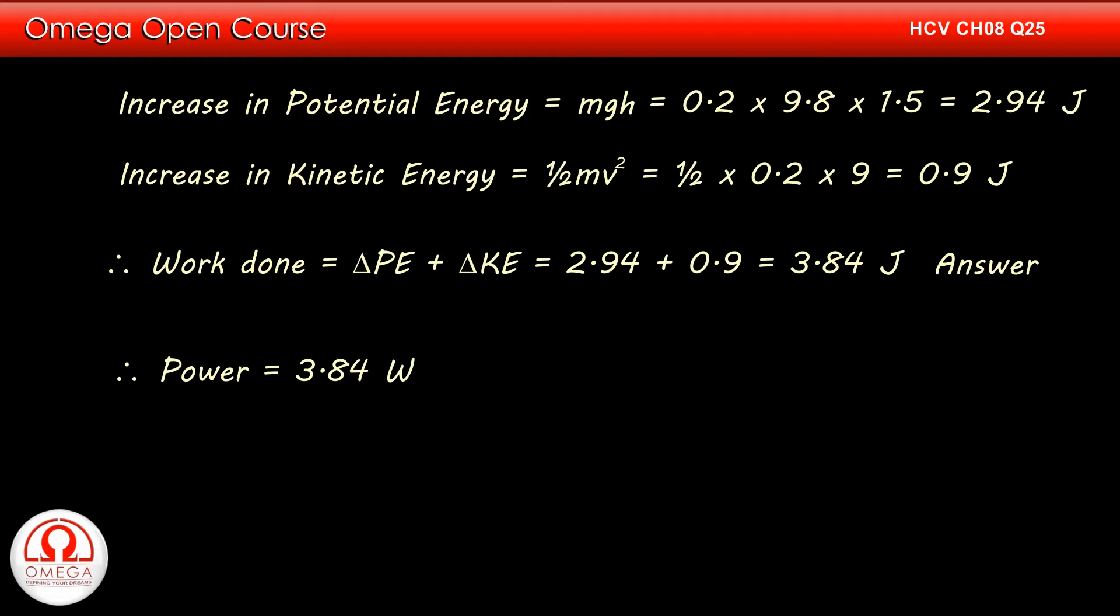Power is defined as the work done by time taken. Since the time taken is 1 second, the power is equal to 3.84 Watts. One horsepower is equal to 746 Watts. Therefore, the power used in horsepower units is equal to 3.84 divided by 746 or 5.14 × 10 to the power minus 3 horsepower. This is answer to the second part of the question.